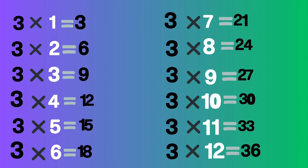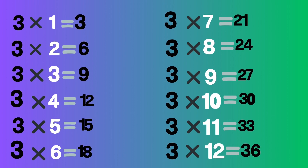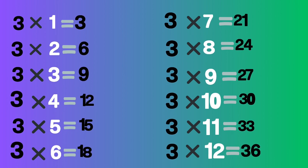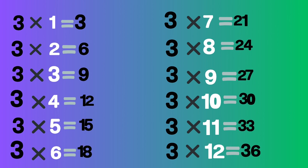Three eights are twenty-four, three nines are twenty-seven, three tens are thirty, three elevens are thirty-three, three twelves are thirty-six.